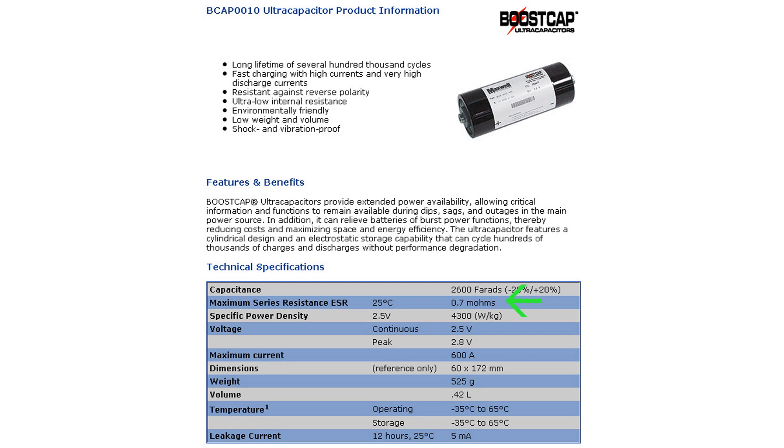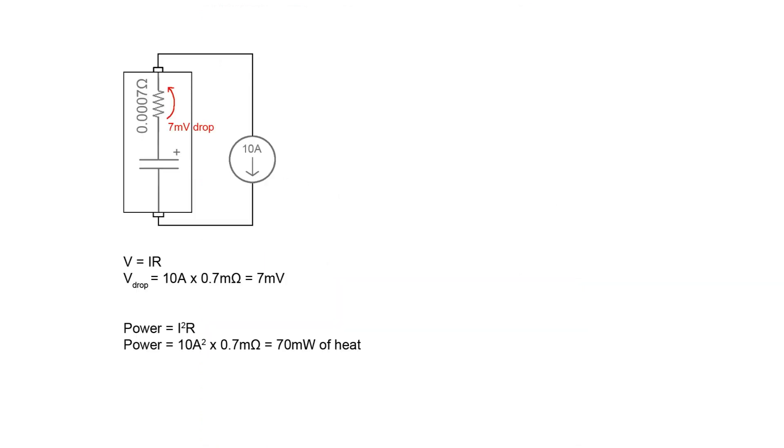Now let's see how the ultracapacitor would perform. This cap has a staggeringly low ESR of 0.7 milliohms. So with a 10 amp load the internal voltage drop is 7 millivolts and only 70 milliwatts of heat are being generated. That's nothing.